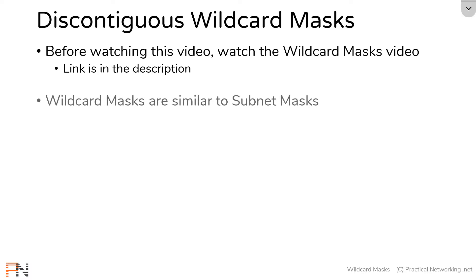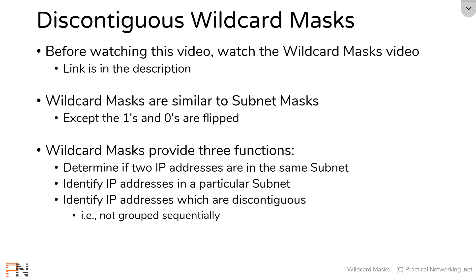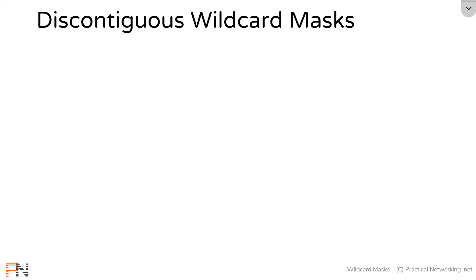In that video, we talked about how wildcard masks are very similar to subnet masks except the ones and zeros are flipped, and we also talked about three functions that wildcard masks provide. In particular, we talked about how two of those functions can totally be done with subnet masks, and the thing that is different about wildcard masks is the third function — that you can use wildcard masks to identify IP addresses which are discontiguous. That's going to be the focus of this video.